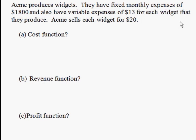The problem is stated as follows. Acme produces widgets. They have fixed monthly expenses of $1,800, and they also have variable expenses of $13 for each widget that they make. Acme then sells each widget for $20.